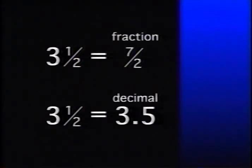If the answer to a question is a mixed number, such as three and one-half, you must convert it to its fraction or decimal equivalent before entering it on a standard grid.